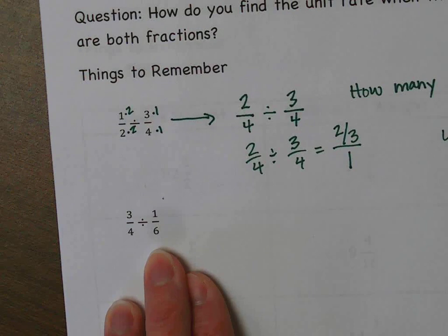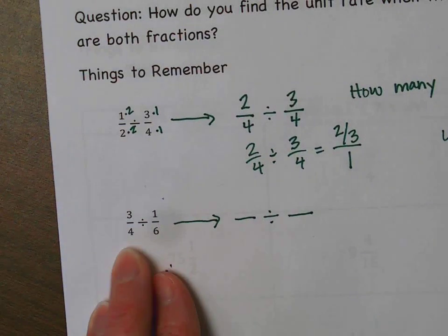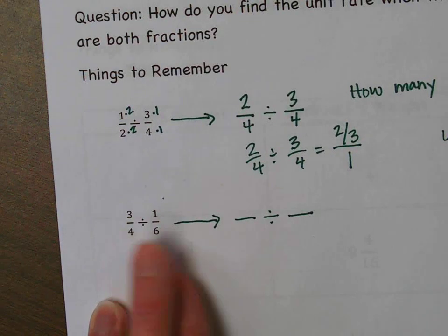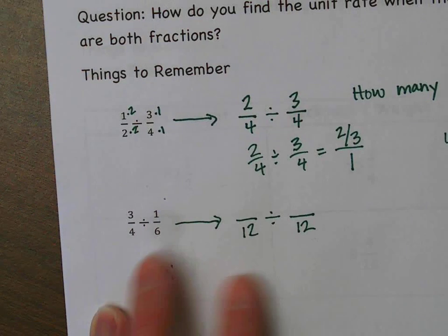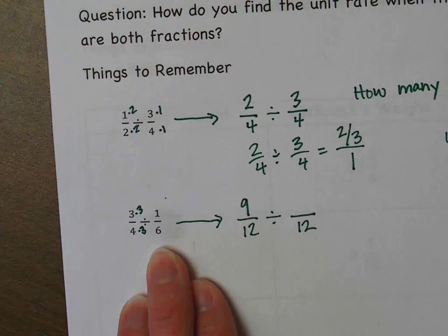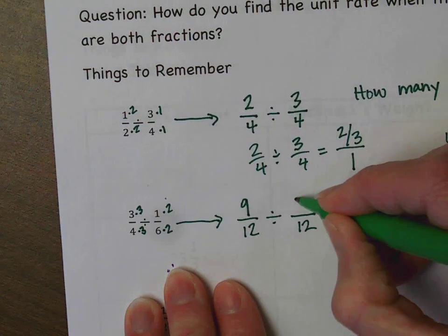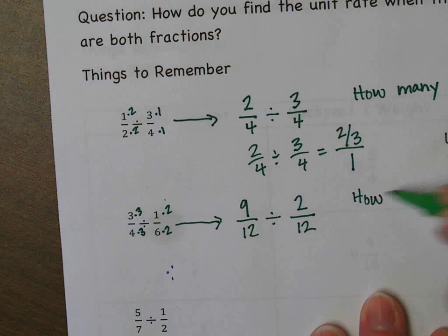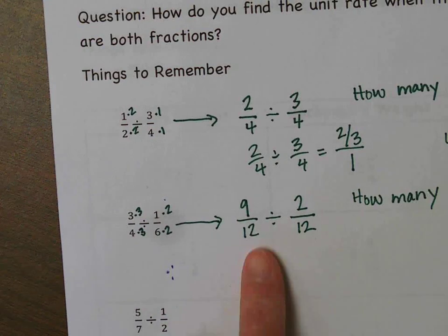Now let's try the next one: 3 fourths divided by 1 sixth. Again, we're finding a common denominator. I like to use the smallest one they share. I know that 4 and 6 both share 12, so 12 is my common denominator. How did I get from 4 to 12? I multiplied by 3, so 3 times 3 is 9 — giving 9 twelfths. How did I get from 6 to 12? I multiplied by 2, so 1 times 2 is 2 — giving 2 twelfths. The question now is: how many 2 twelfths fit into 9 twelfths?